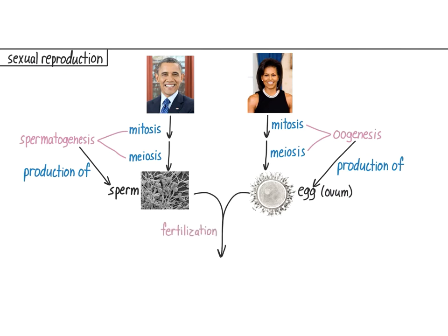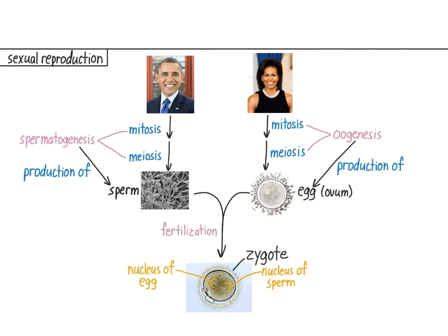Remember that fertilization is the fusion of the egg, which carries the female's chromosomes, and the sperm, which carries the male's chromosomes, to form the zygote. This is a zygote just after fertilization. You can still see the nucleus that came from the sperm and the nucleus of the egg. The precise meaning of fertilization is the fusion of these two nuclei to form one nucleus containing both the male's and female's chromosomes. More generally, the term fertilization can refer to the infiltration of the egg by the sperm. In this video, we'll examine spermatogenesis; in the next video, we'll get to oogenesis and fertilization.